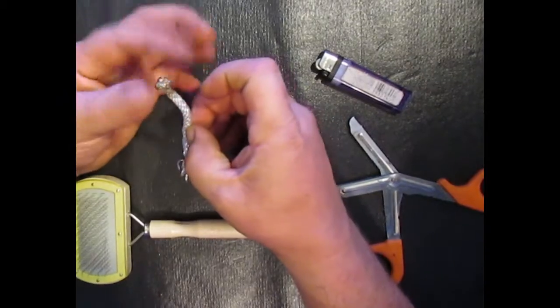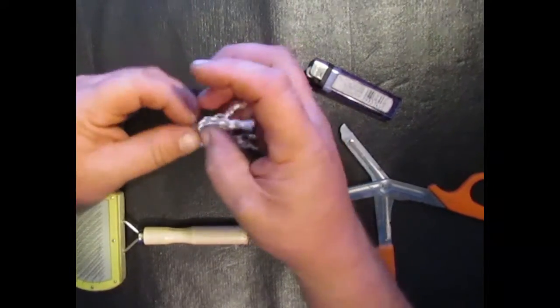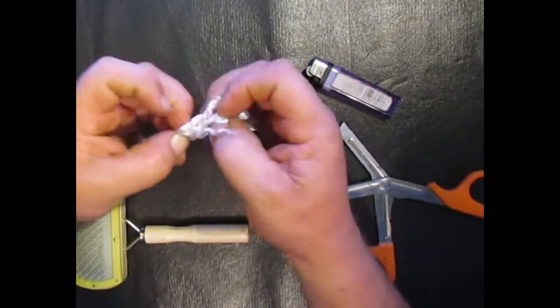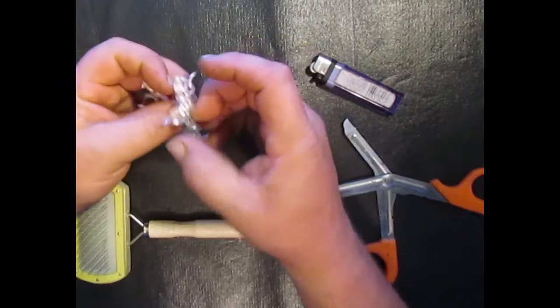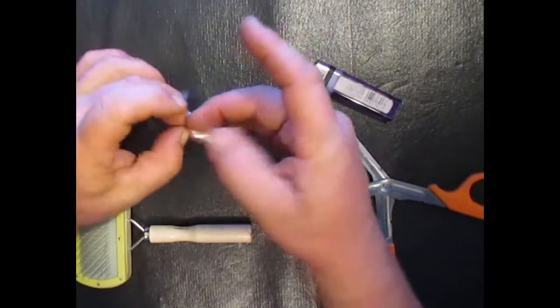After you get that melted and it starts cooling down, you're just going to work this stuff out so that it gets all unshredded here. The better you can unshred that or unhook it or unweave it, whatever you want to call it.